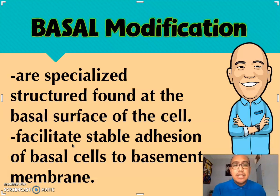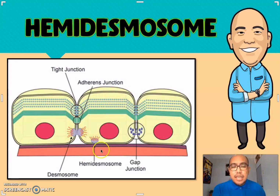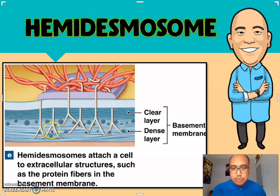After the apical, we have the basal modification. These are specialized structures found at the basal surface of the cell, and they facilitate stable adhesion of basal cells to the basement membrane. A very good example of basal modification is the hemidesmosomes, which help in attachment or post-cellular adhesion. Hemidesmosomes attach a cell to extracellular structures such as protein fibers in the basement membrane.